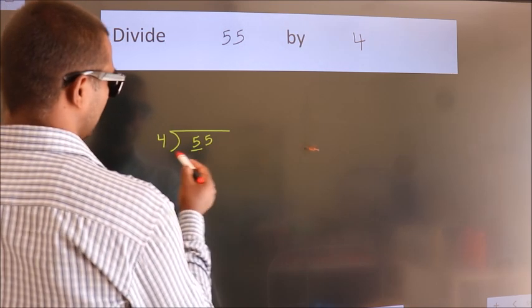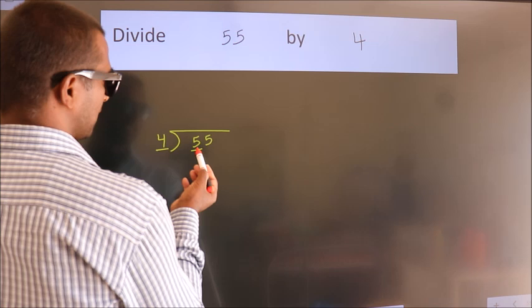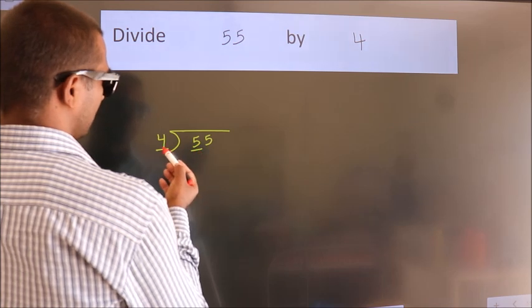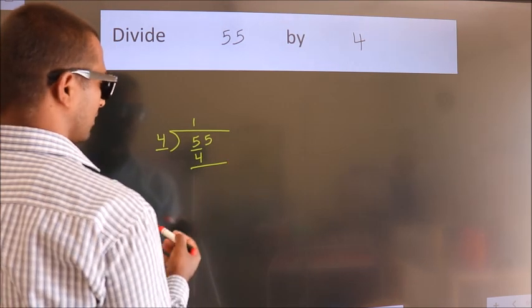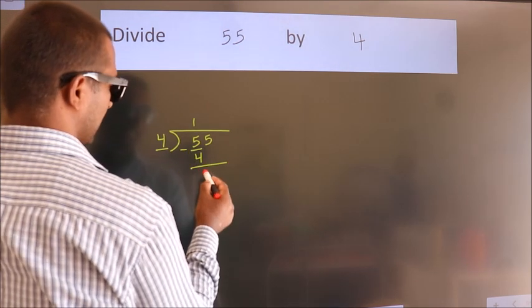Here we have 5. Here 4. A number close to 5 in 4 table is 4 once 4. Now we should subtract. We get 1.